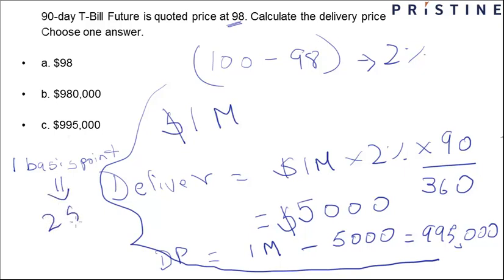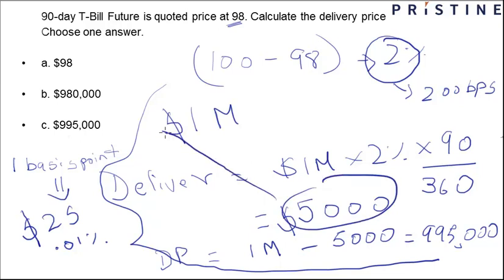by $25. In other words, one basis point is equal to $25. One basis point is 0.01%. So in this case, our entire discount amount was 2%, or in other words, 200 basis points. So 200 times 25 dollars would again give you $5,000, and that would give you the same answer. So C is the right option.